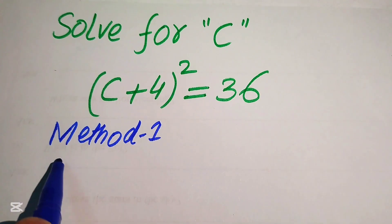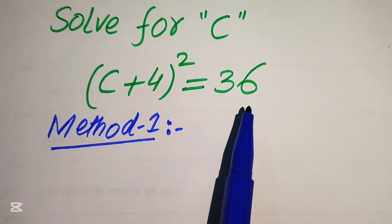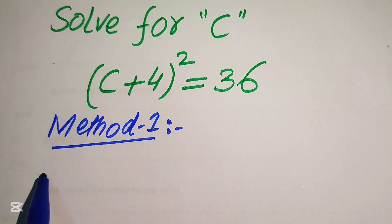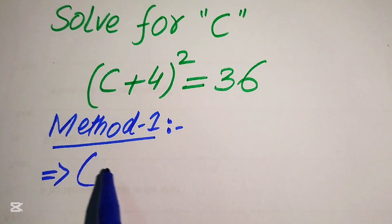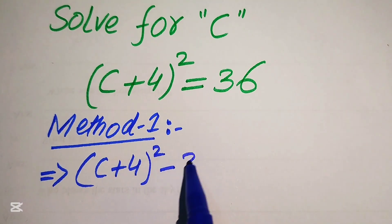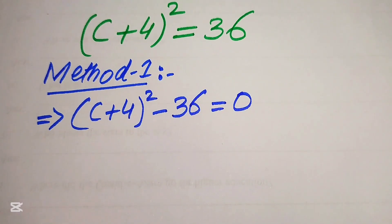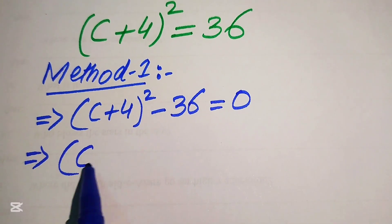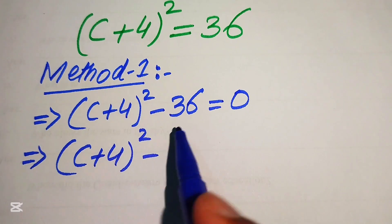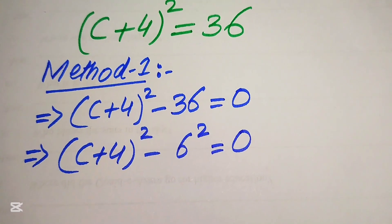In method one, we need to focus on the right hand side. Here we have 36, and we move this 36 to the left hand side, so it will be written as (c + 4) whole square minus 36 equals to 0. In the next step we rewrite this as (c + 4) whole square minus 6 square equals to 0.